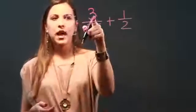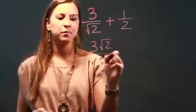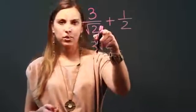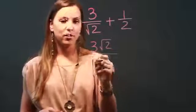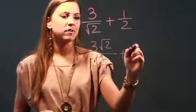So when I do that, on the top I have 3 times radical 2, which is 3 radical 2, and in the denominator I have radical 2 times radical 2, which is radical 4, which is just the number 2. And now I'm going to add that to 1 half.